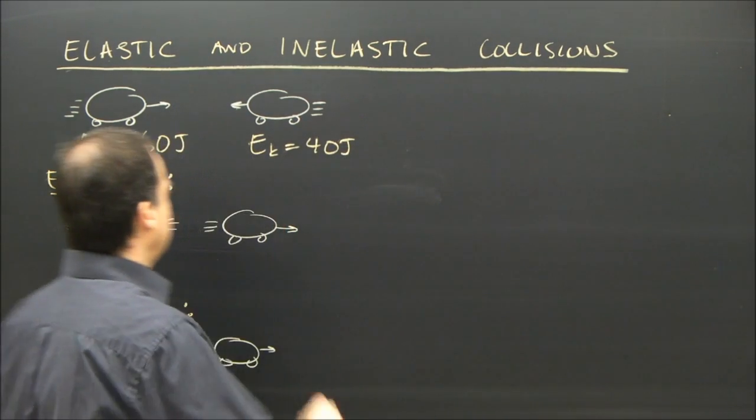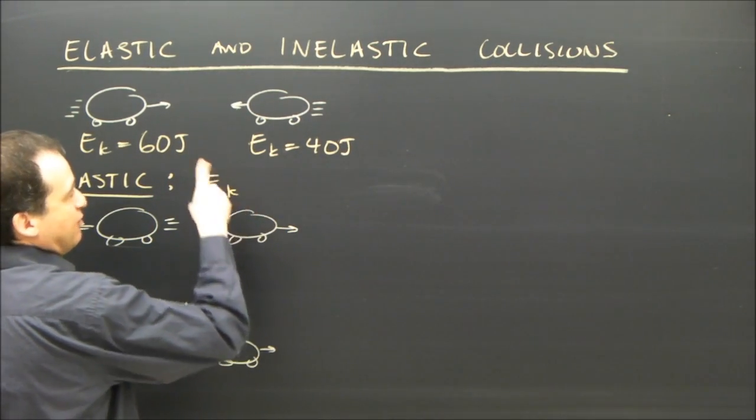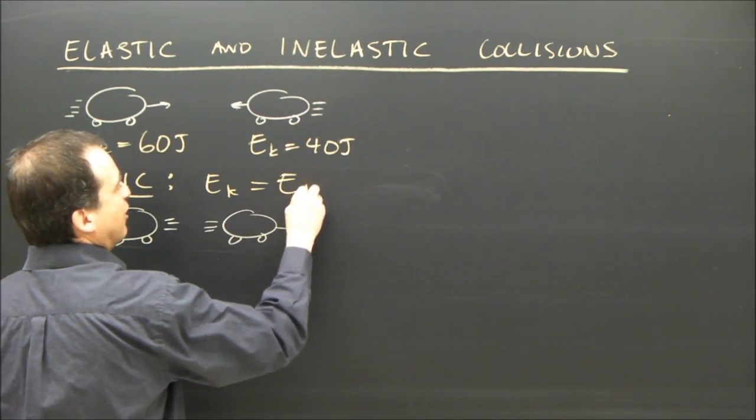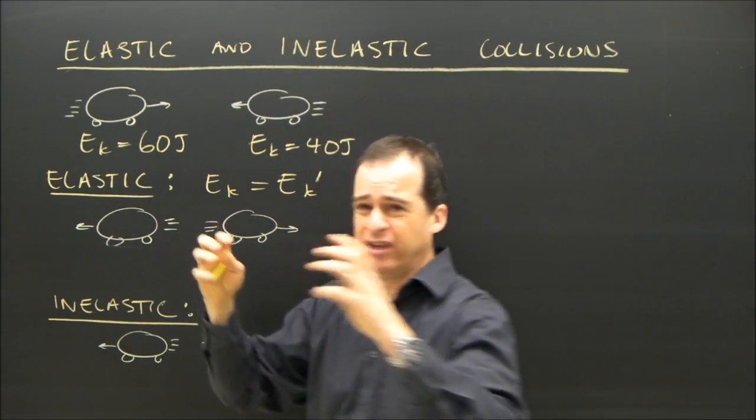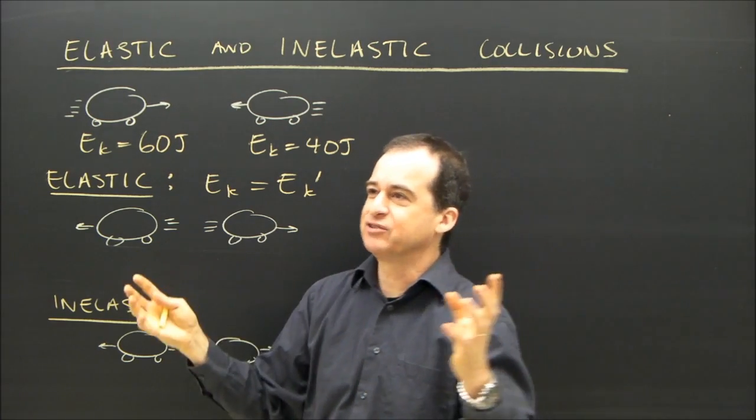In an elastic collision, the kinetic energy that you have at the beginning is still there at the end. When the two carts collide, some of the energy is absorbed in a bumper or they change shape a little bit and then they bounce off each other.